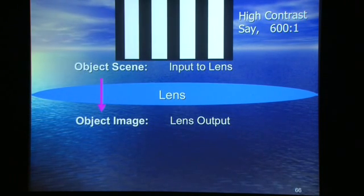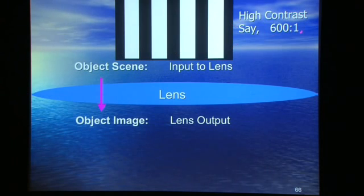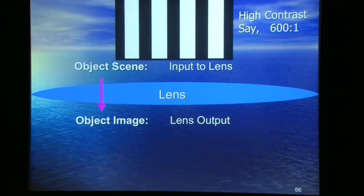This is very, very important when you come to consider resolution and sharpness. I'm postulating a lens looking at a scene, and I'm making a nice simple scene — low frequency black and white bars. And let's say they've got a great high contrast; I've just picked 600 to 1. The lens looks at that, and the lens task is to transfer that object seen from the real world into an object image coming out of the lens.